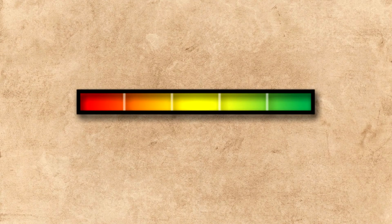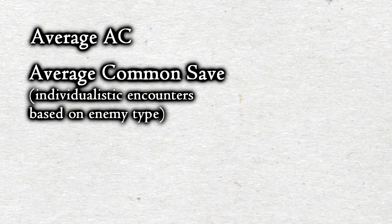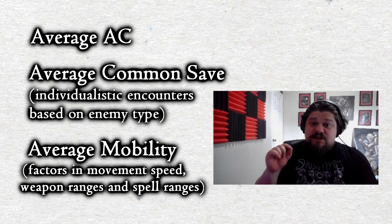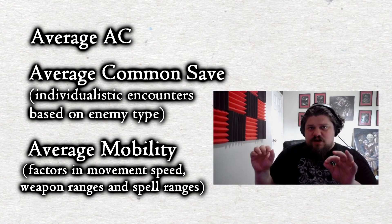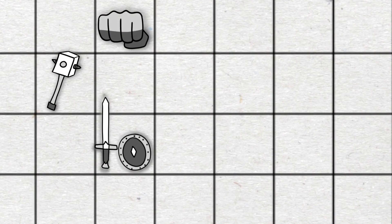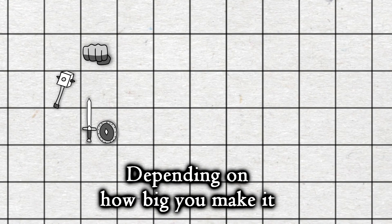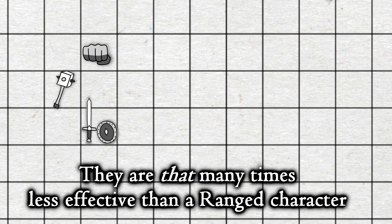When you understand how many hit points your players have, you can calculate how much damage they can take and therefore how deadly your encounter can be. You also have to calculate average AC, average common save, and average mobility, because mobility is very important for calculating distances. If you have a melee-heavy party and you make the arena big, they are proportionally less effective than a ranged character. Then calculate average player experience.